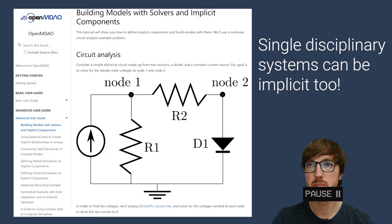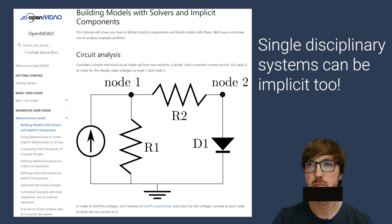Hey there, while I was editing this, I realized that I only showed examples of multidisciplinary implicit systems. I would like to highlight the idea that there are many single disciplinary systems that are implicit. Here there's an example from the OpenMDAO docs where there's an electrical circuit which needs implicit components to be modeled correctly. I just want to be clear here, there are many cases, such as aerodynamics alone, structures alone, electrical circuits, where you do have implicit systems.